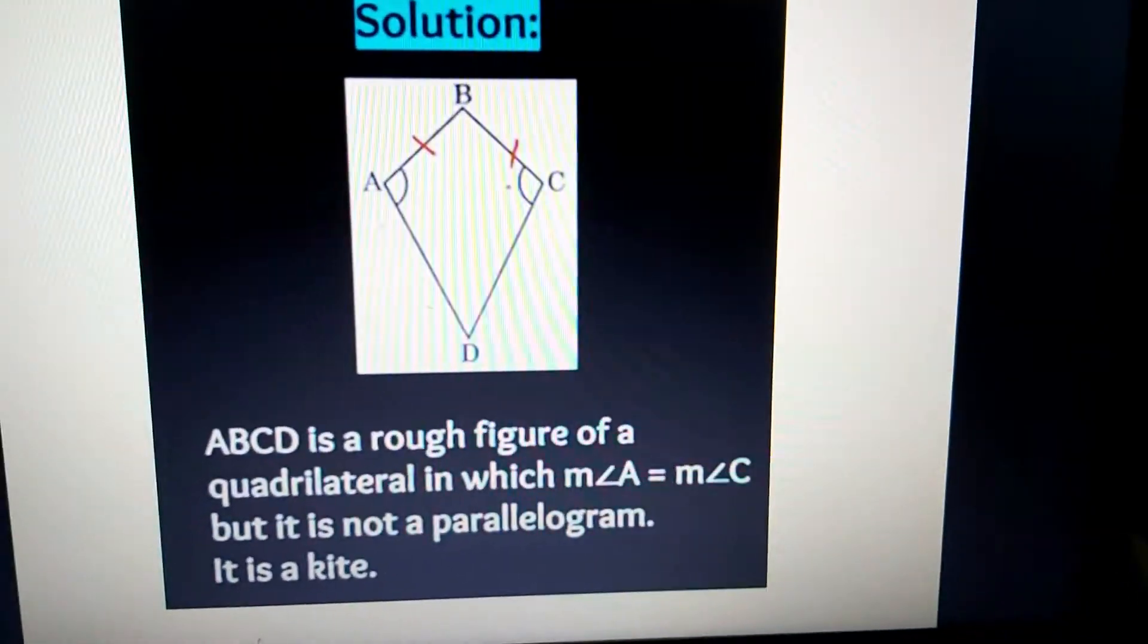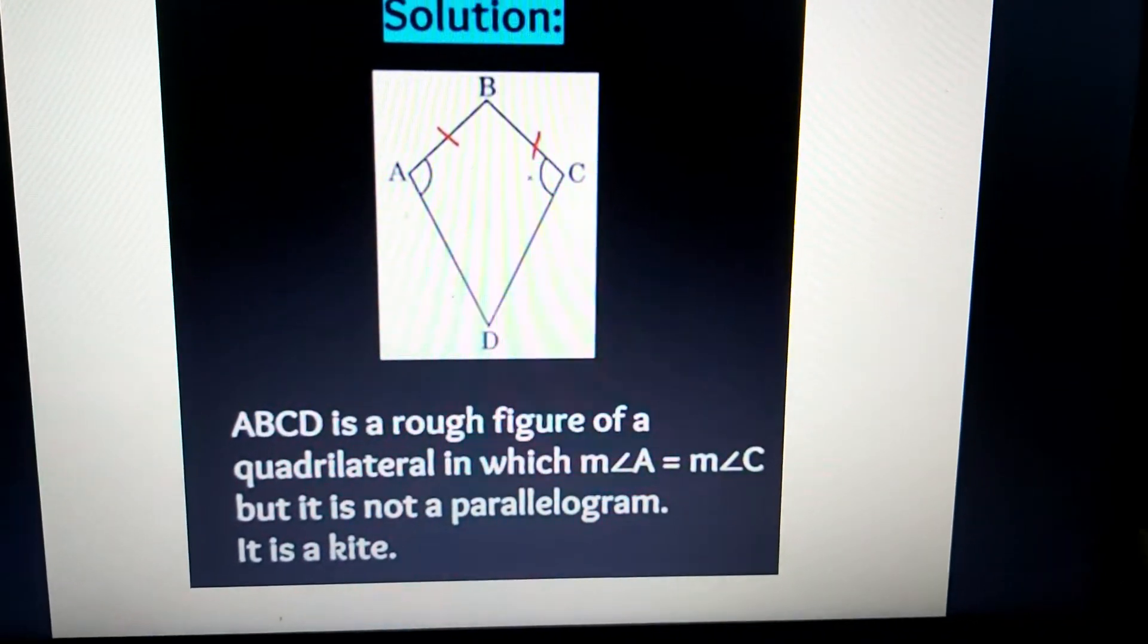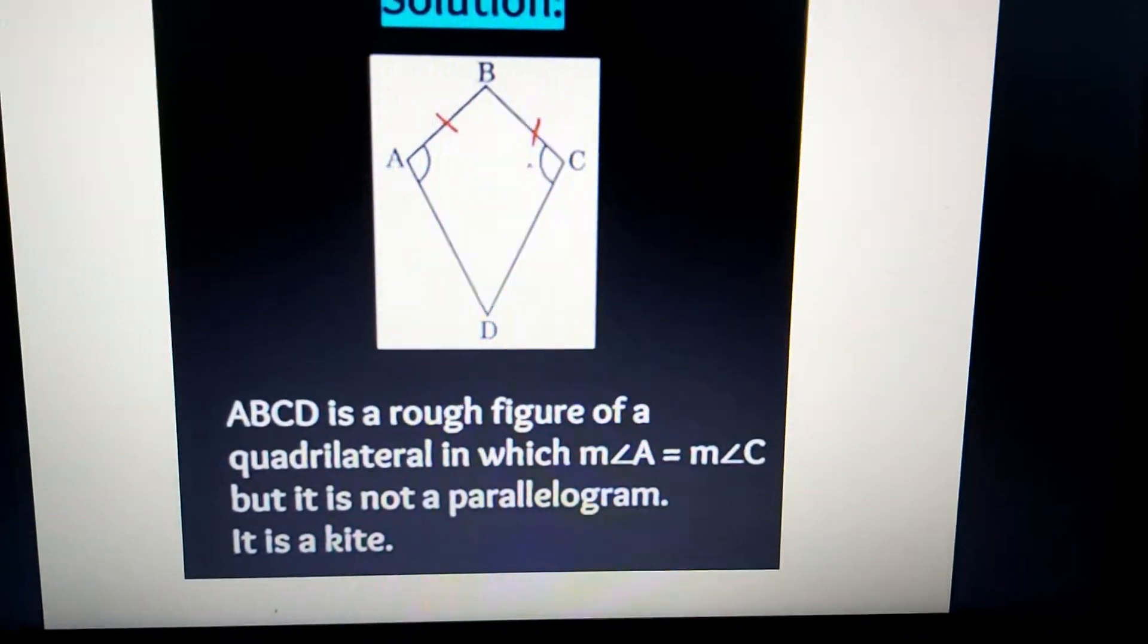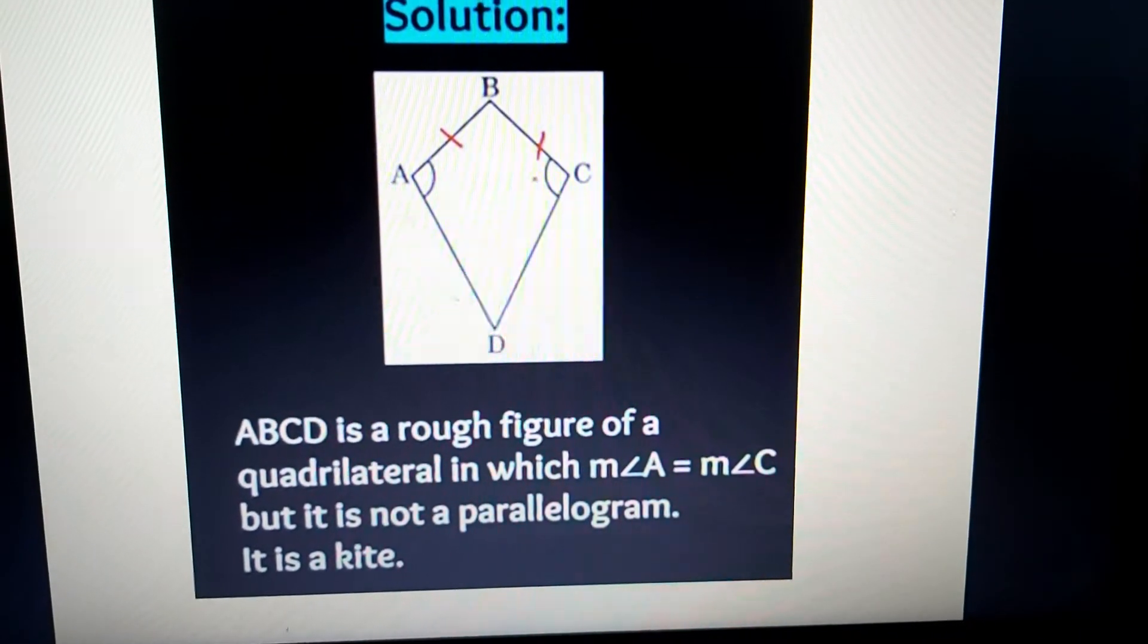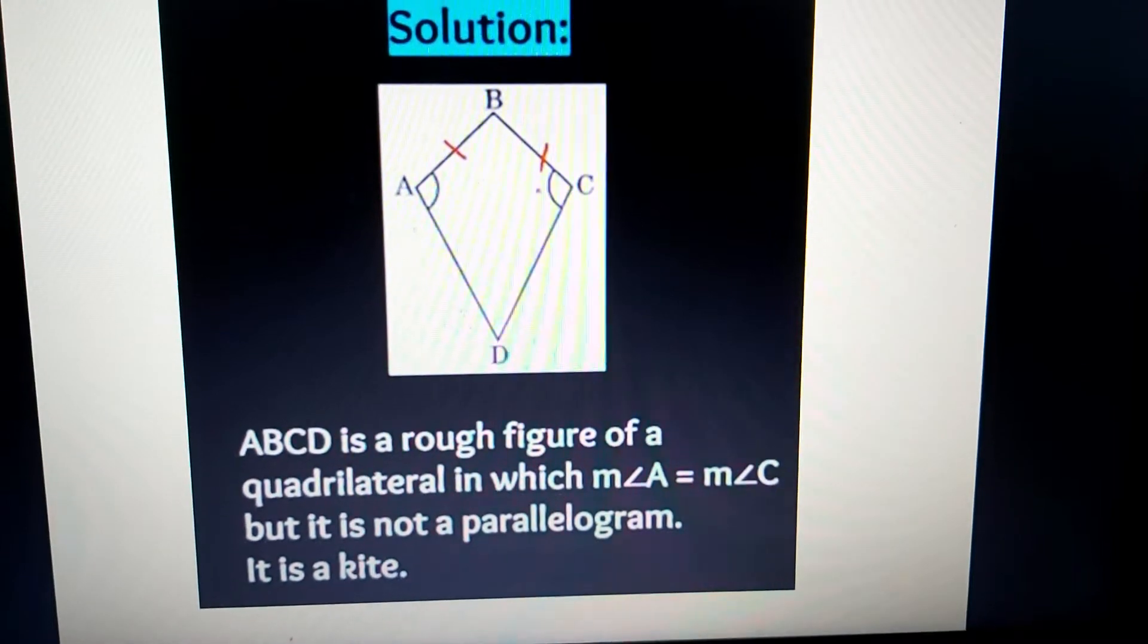Now we have the solution. ABCD is a rough figure of a quadrilateral in which angle A is equal to angle C, but it is not a parallelogram. It is a kite. We know that AB is equal to BC.